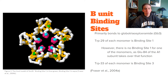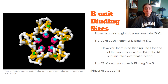The tryptophan amino acid at residue number 33 in each of the monomers is displayed in blue. This is binding site 3. Both binding site locations bond to GB3, or Globotriaosylceramide, on the exterior of cell membranes.